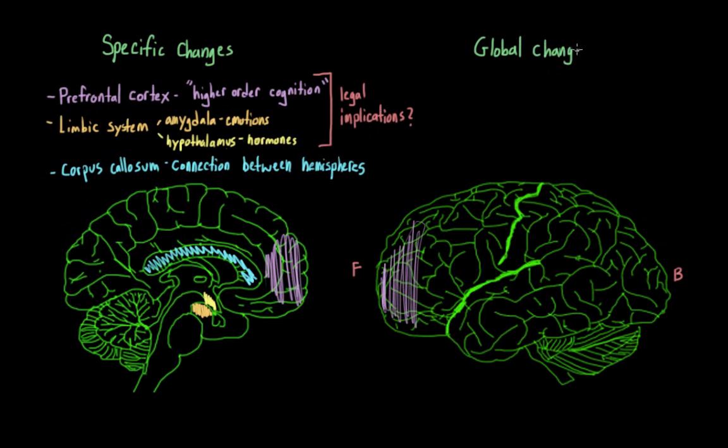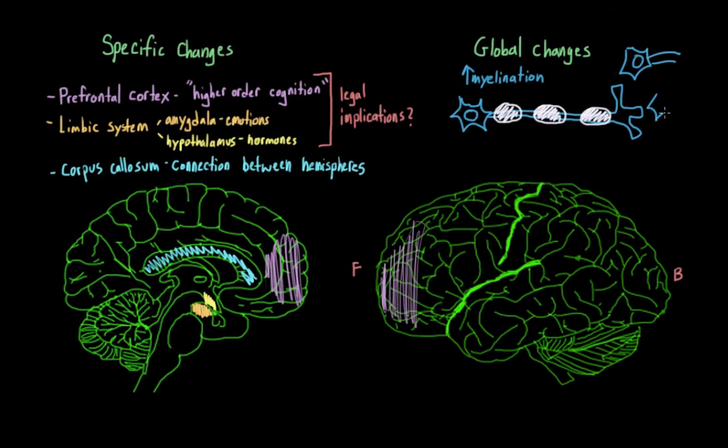One thing that we see during this period is an increase in myelination, especially in the areas that are associated with higher order functioning. And to quickly review, this is a neuron. Neurons communicate with each other by sending signals down these long axons. Myelin is a fatty tissue that covers the axons of neurons and helps to increase the speed at which the neurons can communicate. And faster communication between neurons means faster communication between brain areas. And this can help explain why adolescents are able to process information faster than children.